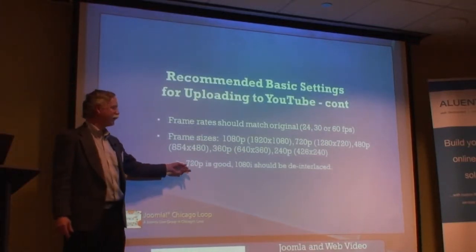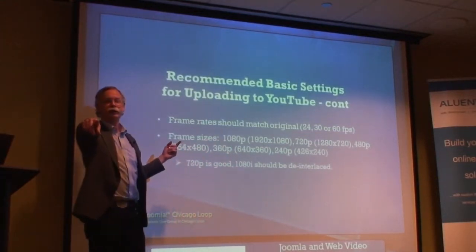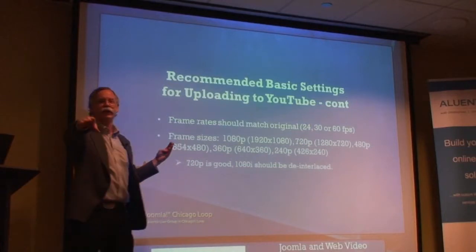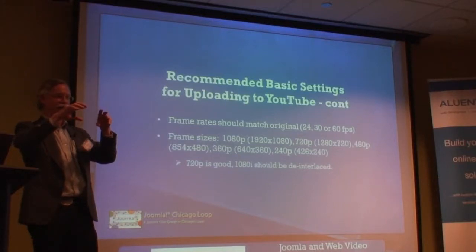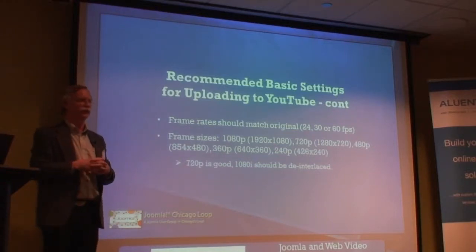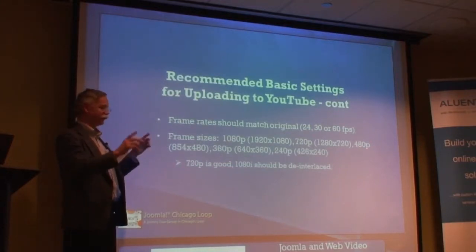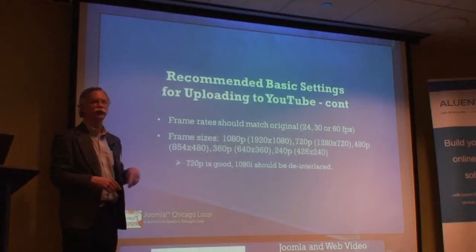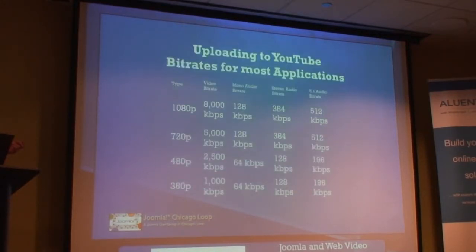720p is 1280 by 720 and 1080p is 1920 by 1080. My camera produces 1440 by 1080 — a lot of cameras produce that, and it actually has to be reconfigured to display properly. Whatever video you have, convert it to whatever size you want and make it progressive — get rid of the interlacing. Computers like progressive video.